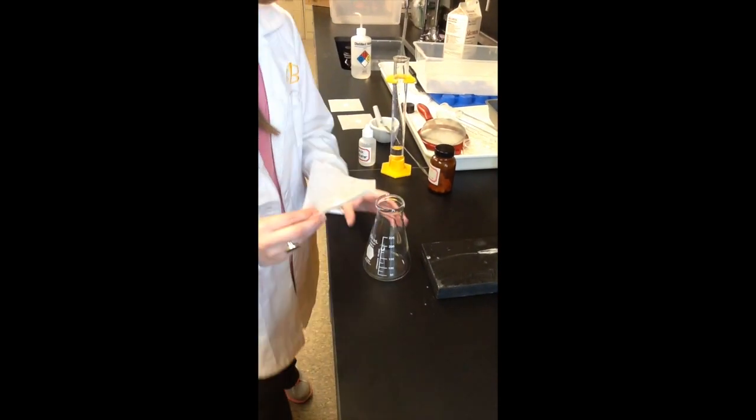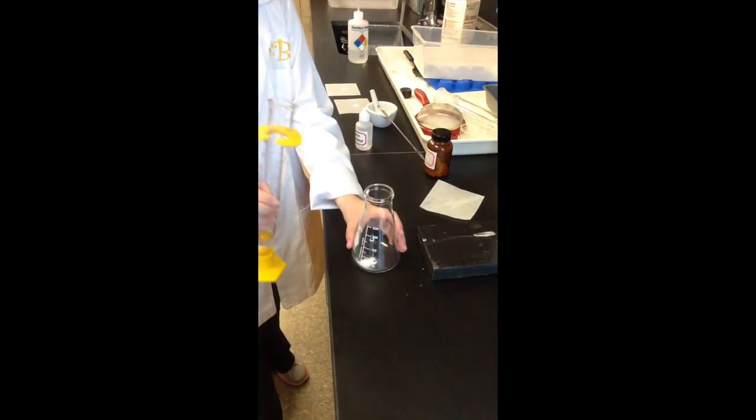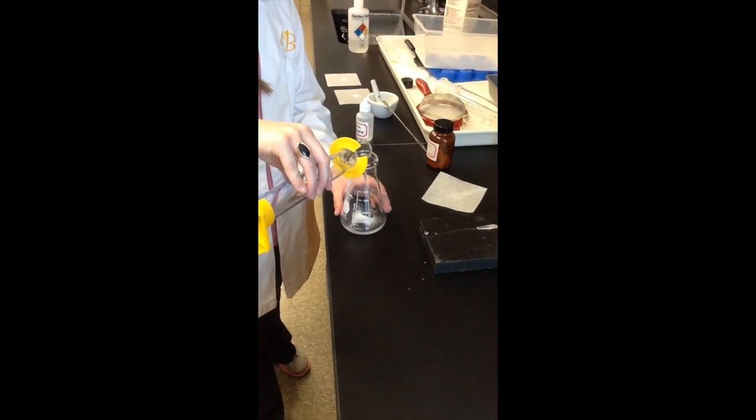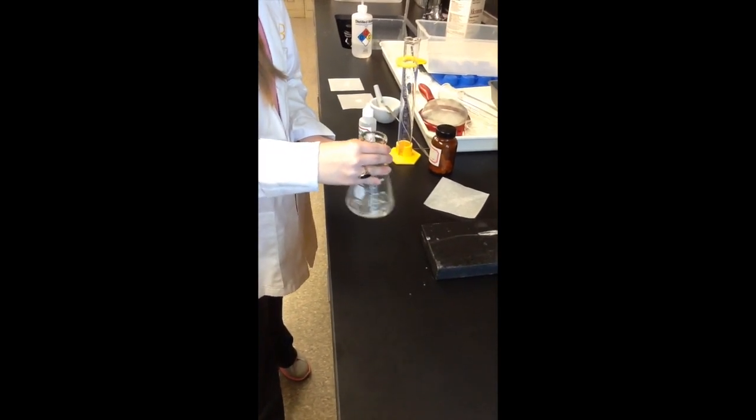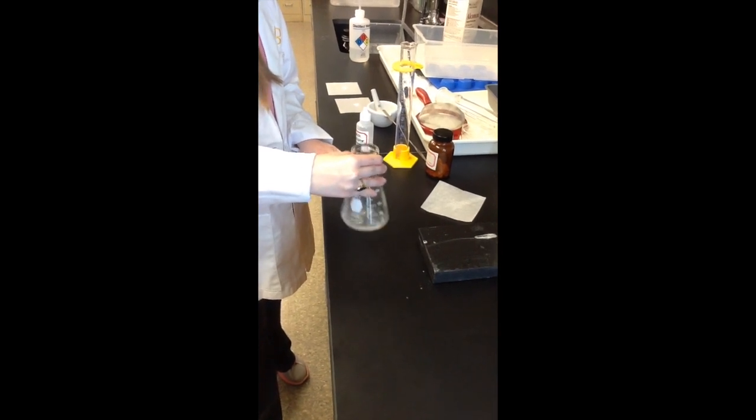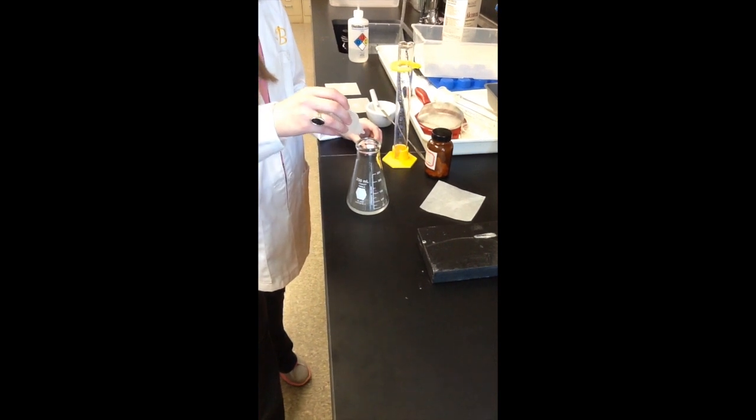Transfer the crushed tablet to a 250 mL Erlenmeyer flask. Add 25 mL of DI water and about seven drops of the starch indicator. Swirl to dissolve the crushed tablet. There may be some powder that does not completely dissolve, but this will not affect your results.